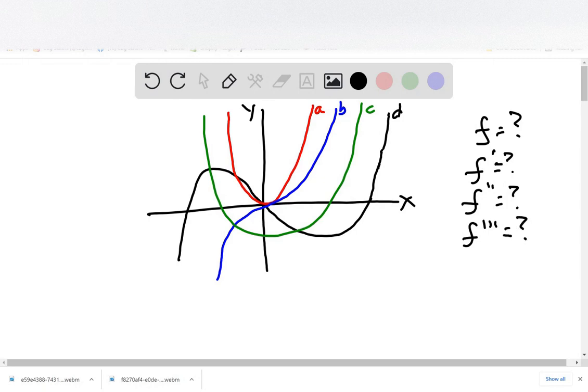Remember that each time we do the derivatives, what we're doing is graphing the slope of the previous curve. So F prime is the slopes of the F curve, and F double prime is the slope of the F prime curve, and so on.